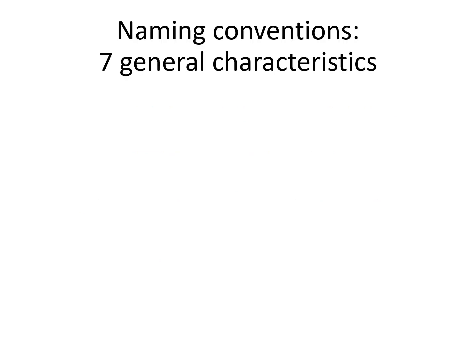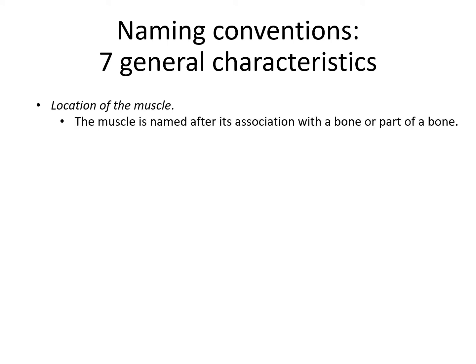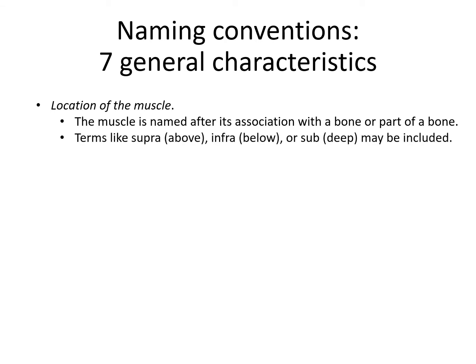As far as how muscles are named, there are seven general characteristics after which muscles are named. We'll go through these one by one. The first is the location of the muscle, which is when the muscle is named after its association with a bone or part of a bone. There are times when muscles are named after two of these general characteristics — such as location and action, or location and size. Usually you'll see terms like supra, infra, deep, or just the name of the bone itself.